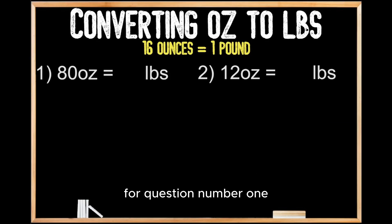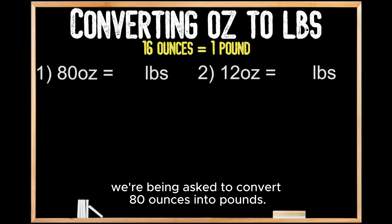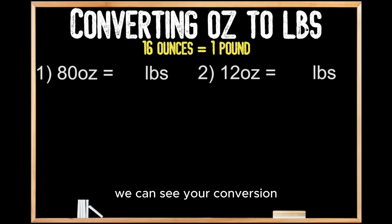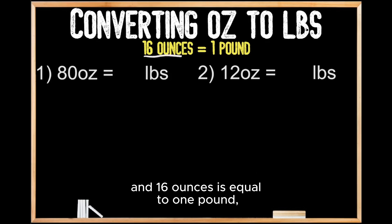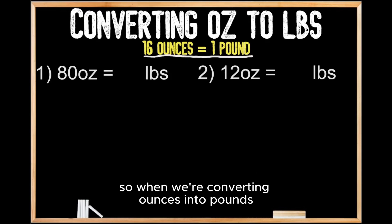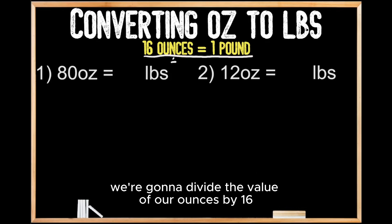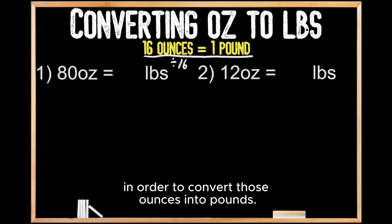For question number one, we're being asked to convert 80 ounces into pounds. Up top here we can see our conversion: 16 ounces is equal to one pound. So when we're converting ounces into pounds, we're going to divide the value of our ounces by 16 in order to convert those ounces into pounds.